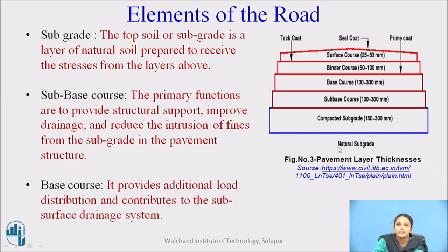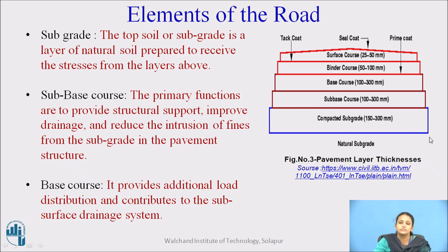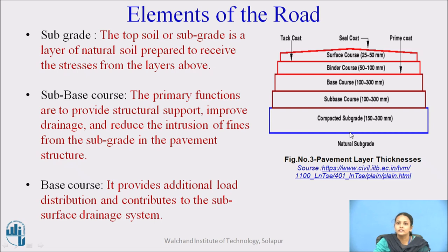The first layer is subgrade — the natural soil, or soil compacted to improve its bearing capacity, which carries the overall load of the road structure. The second course is the subbase course, whose function is to provide structural support over the natural subgrade soil, making it denser and stronger for carrying the overall traffic load. It improves drainage and reduces intrusion of fines from the subgrade. This layer is well compacted using rollers and a small amount of moisture.